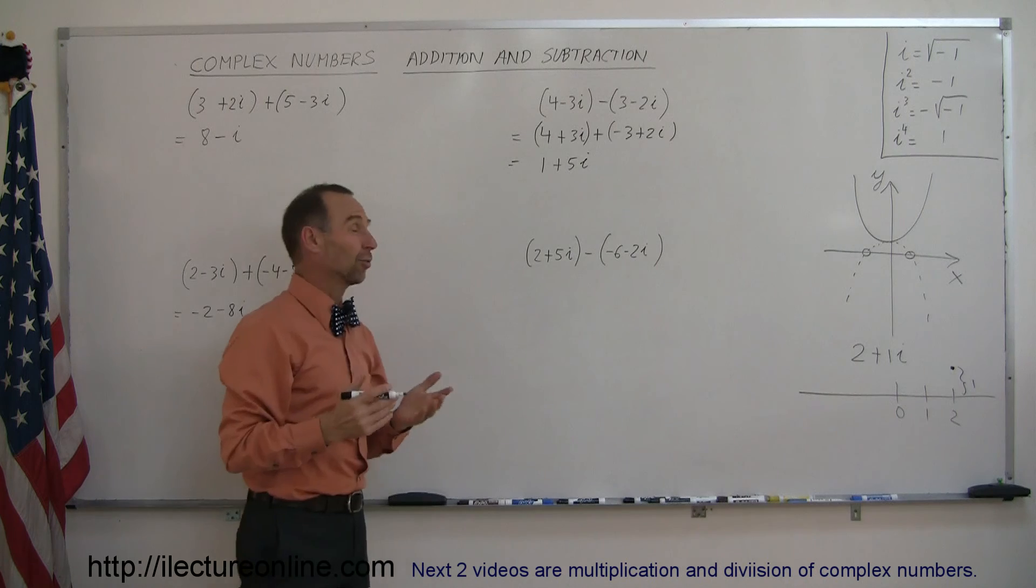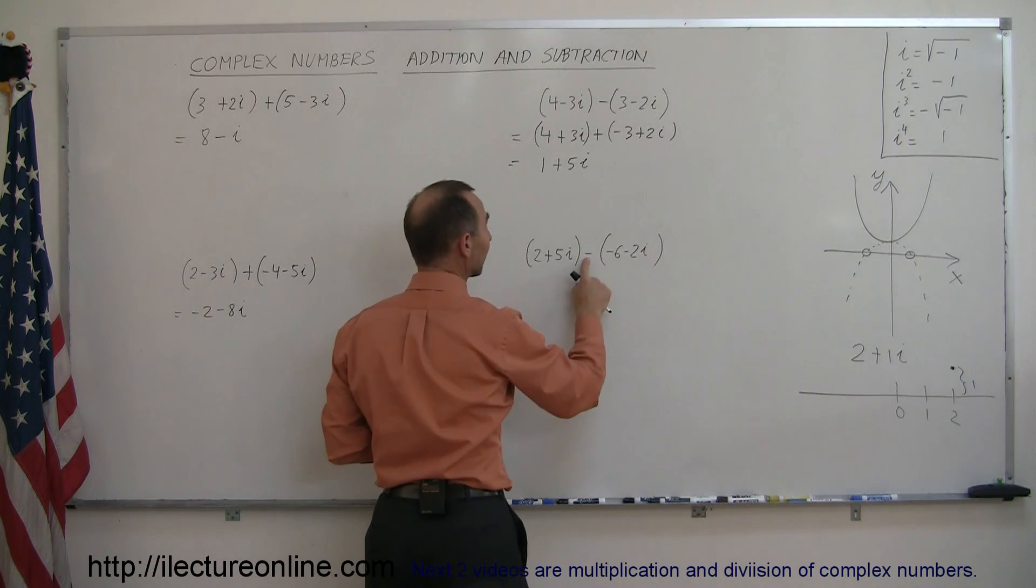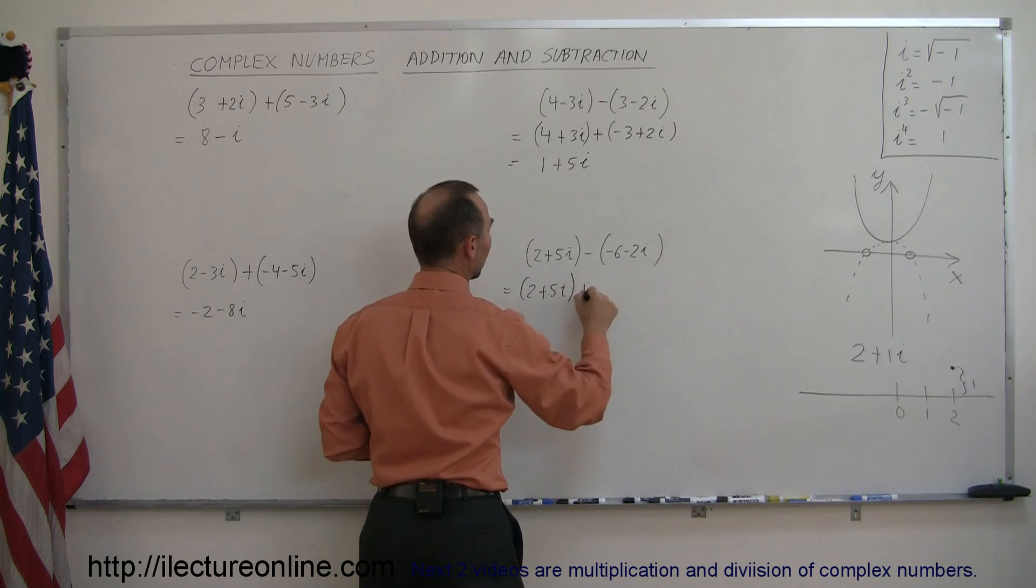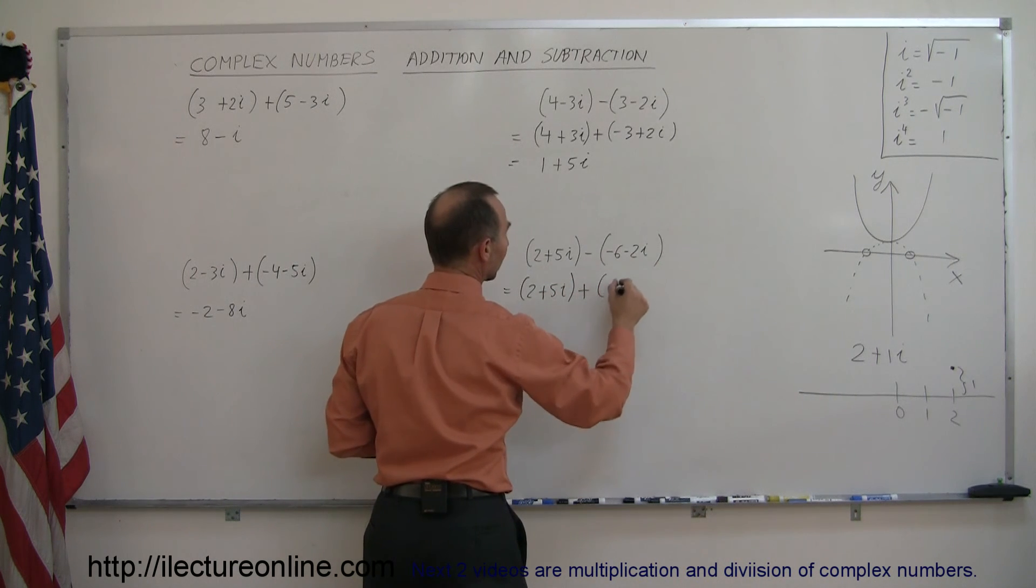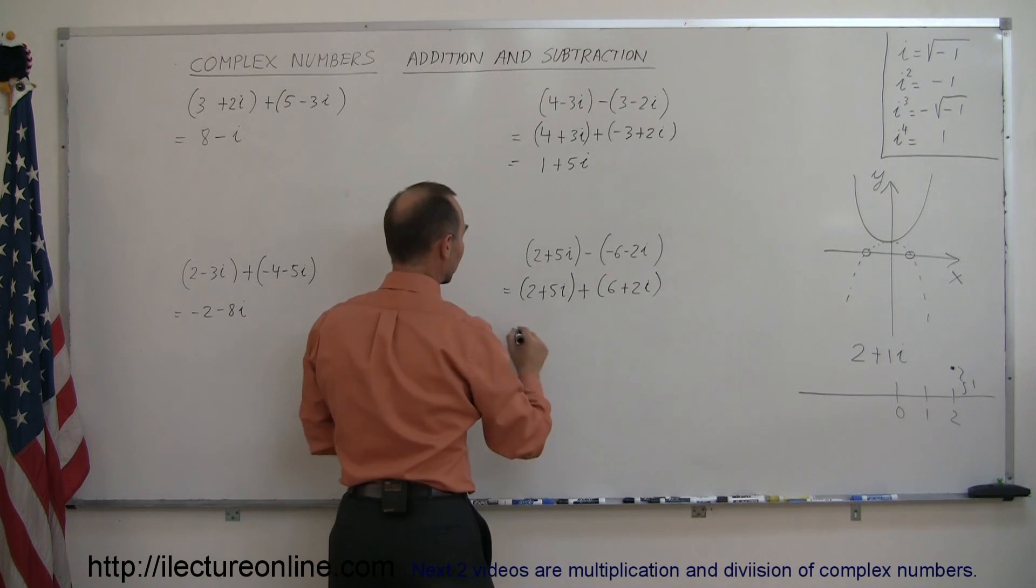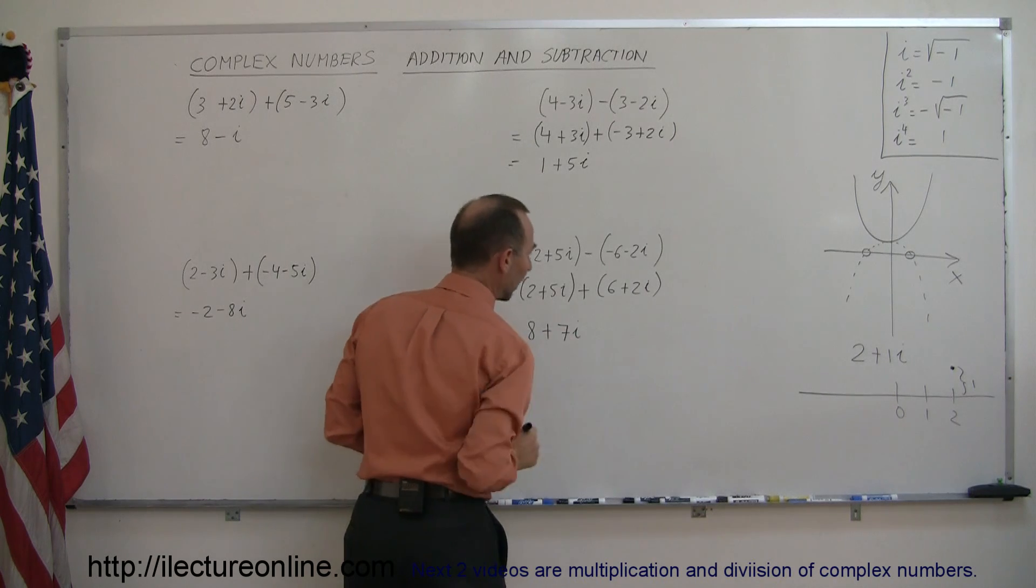Here again, the easiest way to do it is to go ahead and apply the negative sign to everything inside, so write this as 2 plus 5i plus, and then change all the signs inside, negative 6 plus negative 2i. And then all you have to do is add the real parts together, so this is equal to 8, and add the imaginary parts together, so this is 7i.